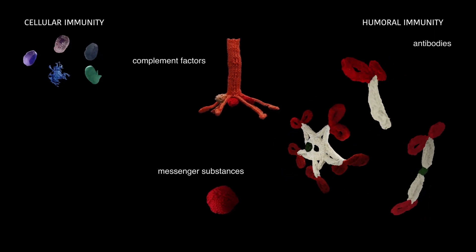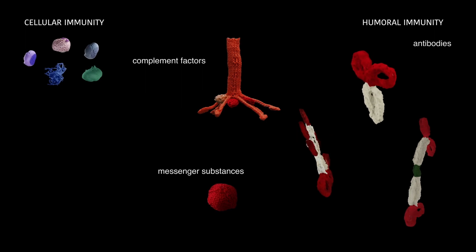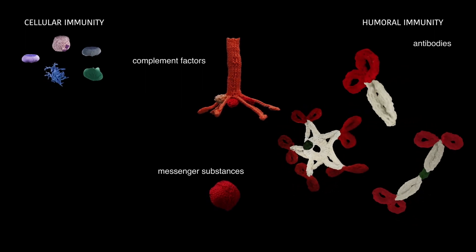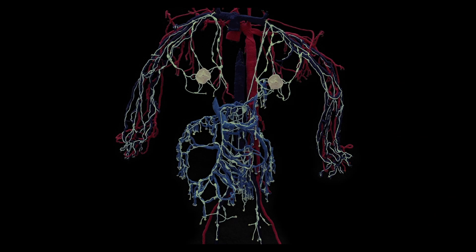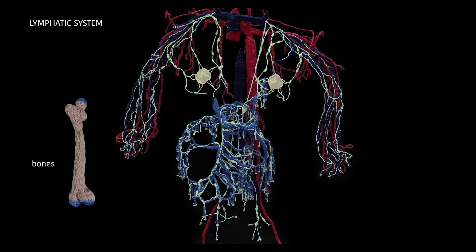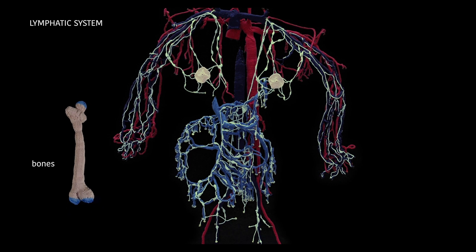But where do these components actually come from and how do they learn their roles? Immune cells are formed in the bones, and are organized and trained in the primary and the secondary lymphatic organs.